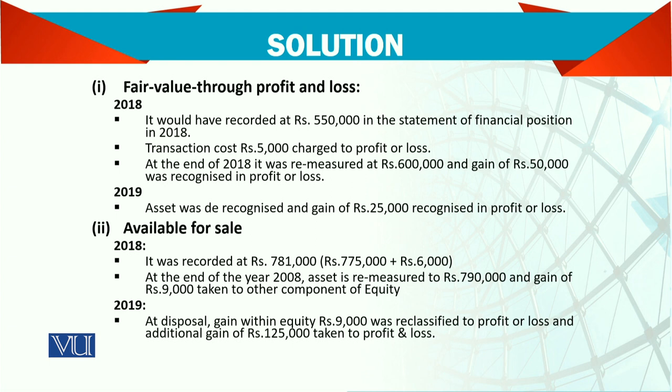For the available for sale investment, at the end of 2018, the asset is remeasured to 790,000. The difference between 781,000 and 790,000 — that is 9,000 — is taken to other comprehensive income (OCI). Note that since the transaction cost was added to the carrying value, the change does not go to profit and loss, but through comprehensive income, which is taken to equity.